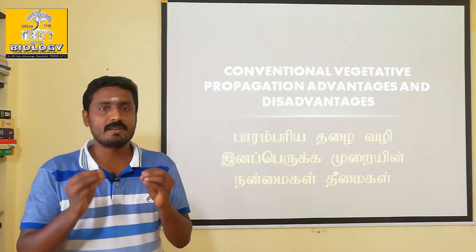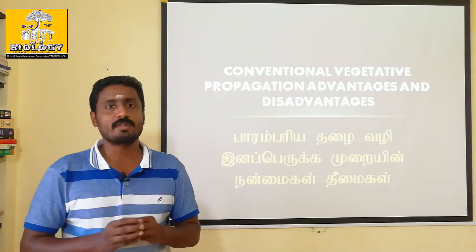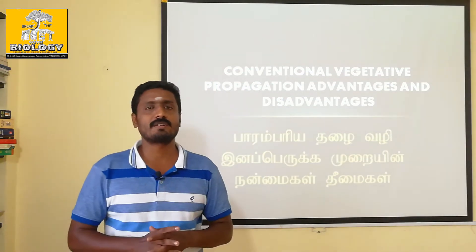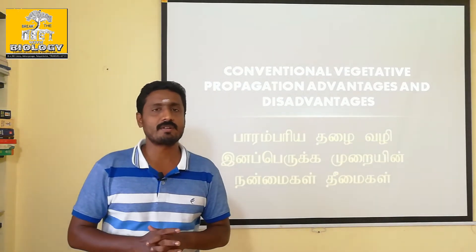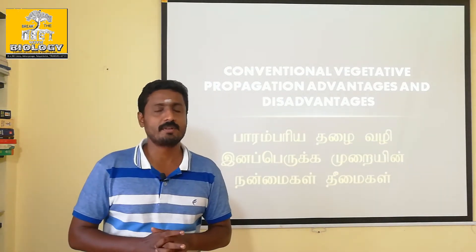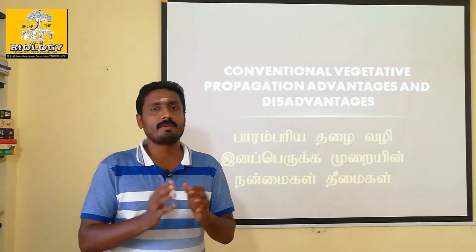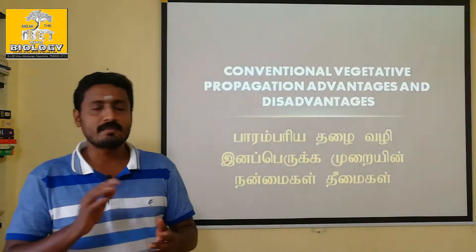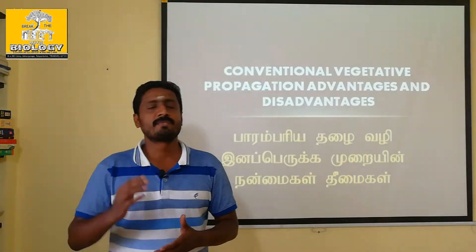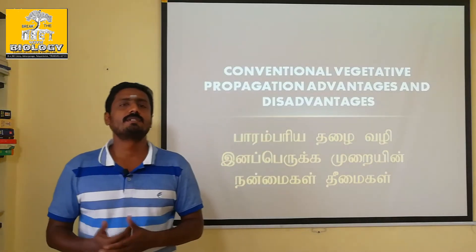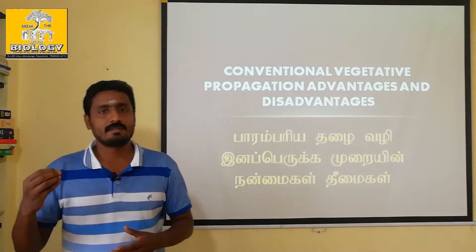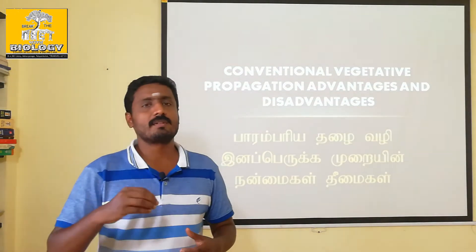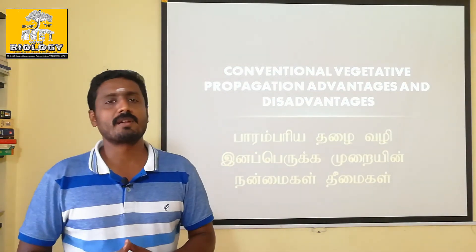Stem, leaf, and root are called vegetative parts. This is the primary function of the plant, and this is the reproduction of the plant.